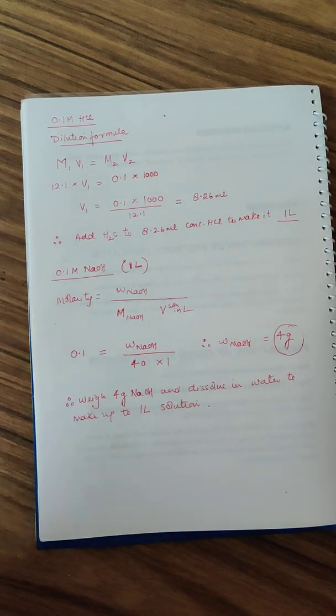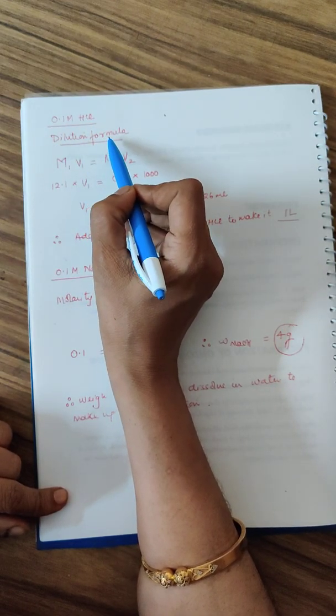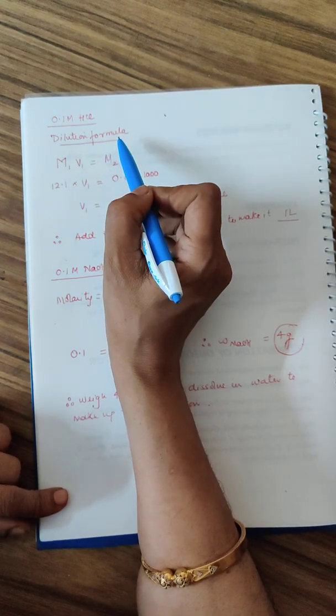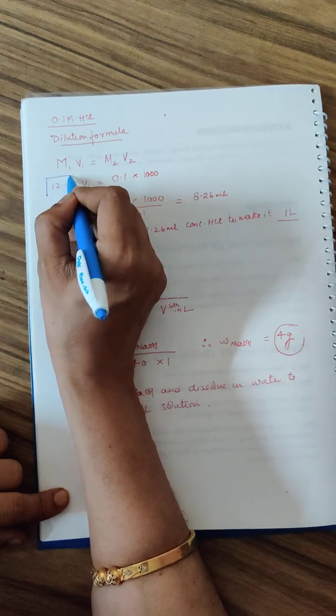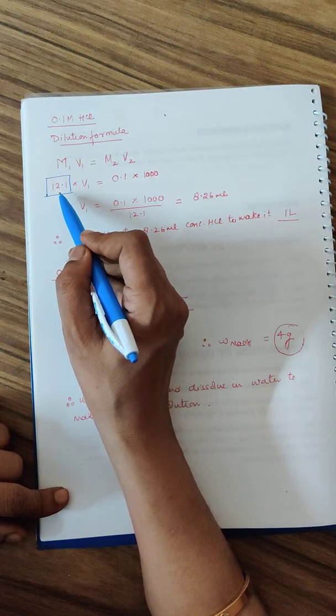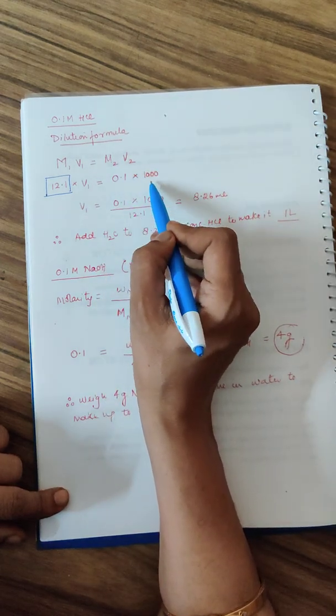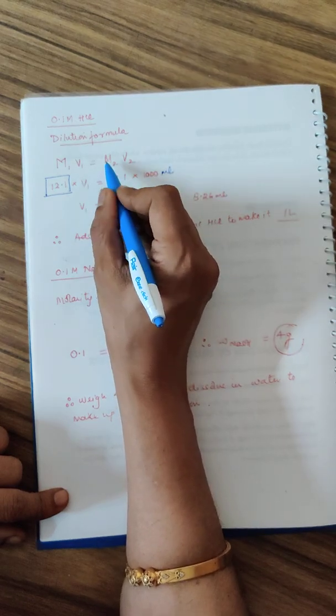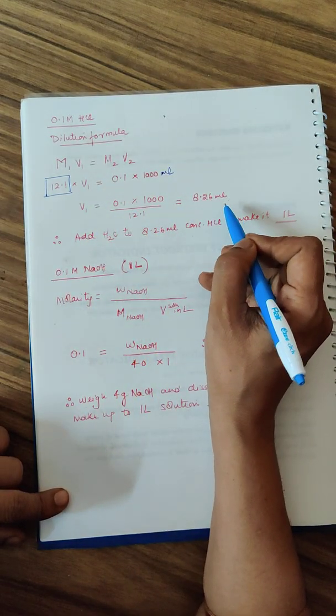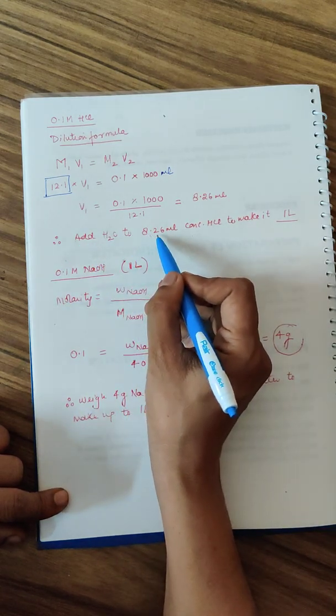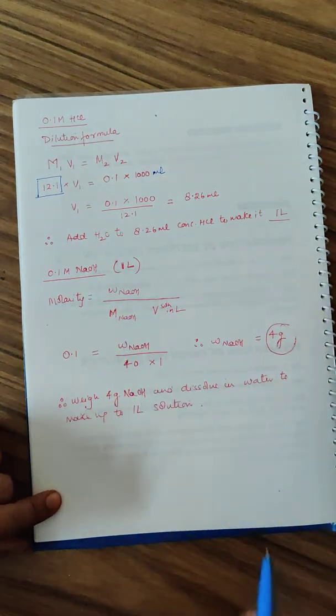Coming to the solution preparation, you will require 0.1 molar HCl. HCl is done by dilution formula. The formula that we use is M1V1 equals M2V2. This is the known molarity of your commercial HCl - the bottle in the lab has molarity 12.1. You have to prepare 1 liter. M2V2 is 0.1 into 1 liter. The volume calculated comes out to be 8.26 ml. So you add water to 8.26 ml of concentrated HCl and make it up to 1 liter.